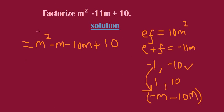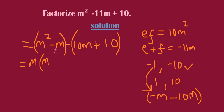We are going to group them and then factor out the common element. Here we have m squared and m, so we are going to take one m out. When we take m out, we remain with m minus 1. Then we check which common element to take out from the second group — we have 10 here and 10 here, so we are going to take out 10.